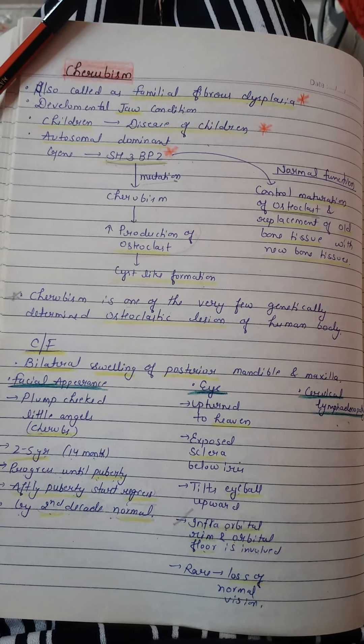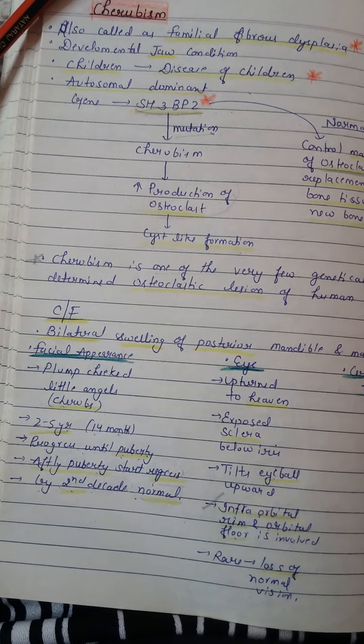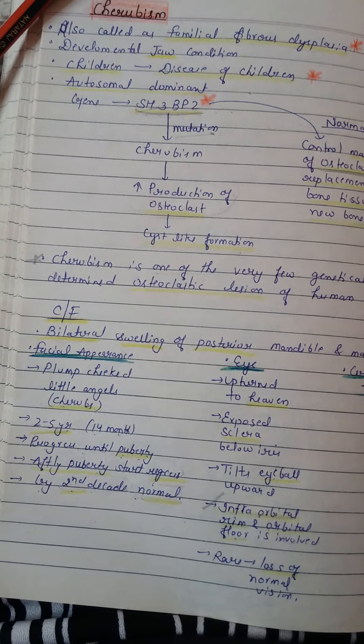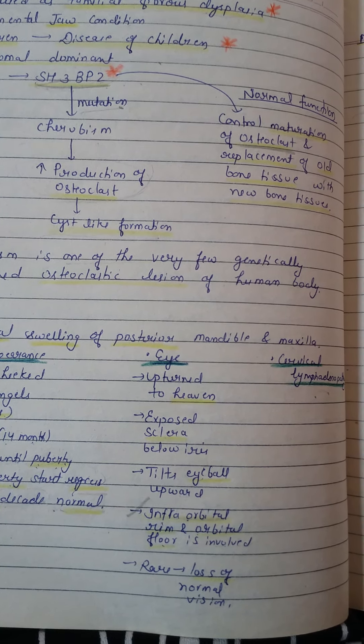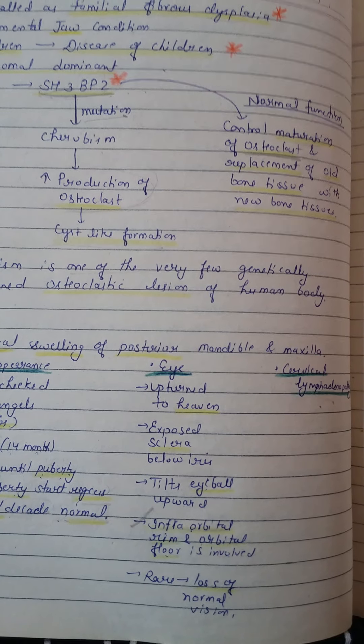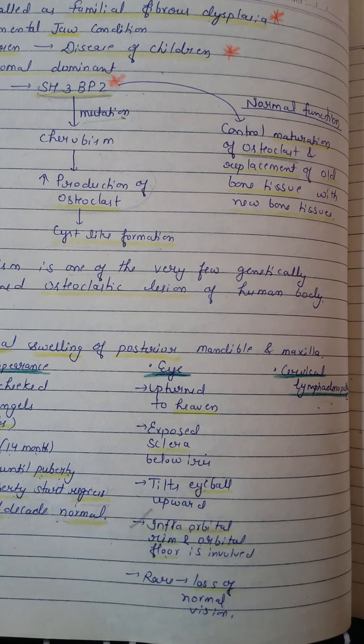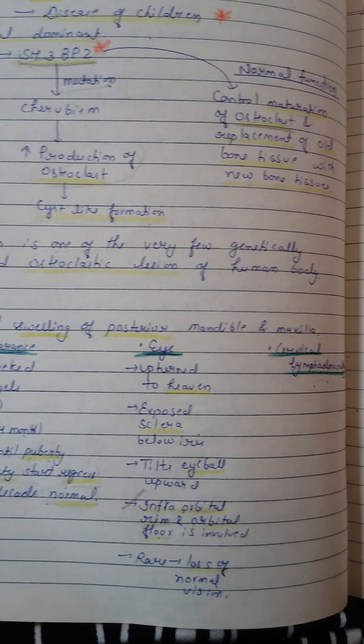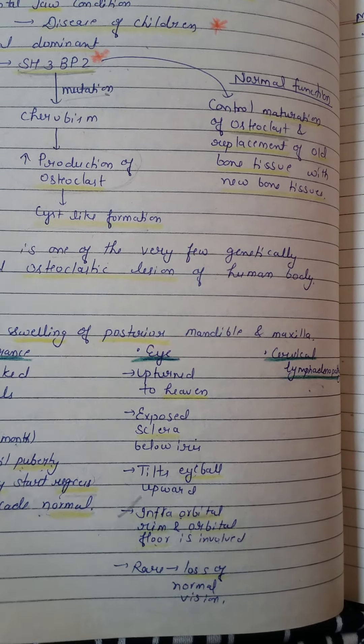The gene involved is SH3BP2. The etiology is genetic — a mutation in the SH3BP2 gene. In normal scenarios, this gene is responsible for maturation of osteoclast cells, which replace old bone tissue. In cherubism, mutation in SH3BP2 leads to increased production of osteoclasts, causing cyst-like formation.